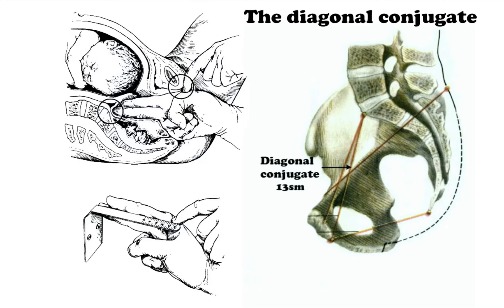After the fingers are taken out, the distance from the tip of the long finger to the marked point of the palm edge — where it encountered the inferior margin of the symphysis — is measured with a measuring tape or pelvimeter. This diagonal conjugate measures 13 cm on average. If it is impossible to reach the sacral bone promontory with the fingertip, the diagonal conjugate dimension is considered close to normal.